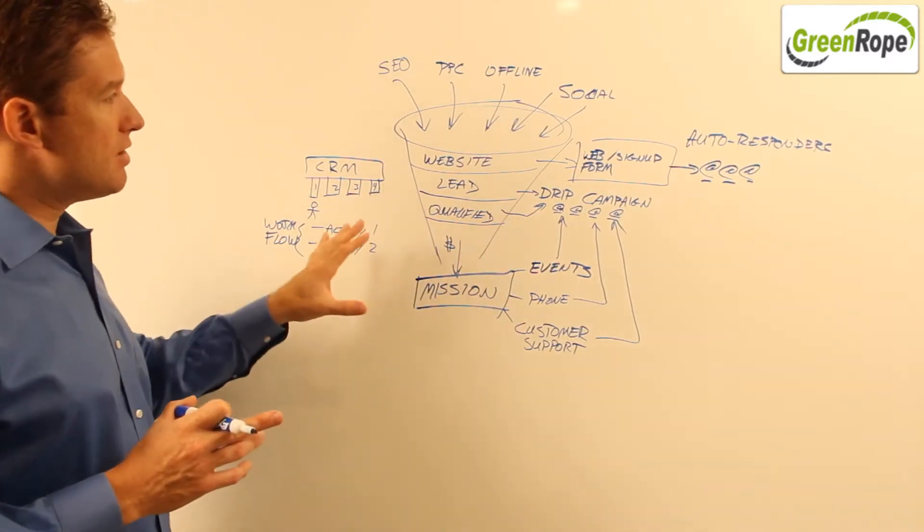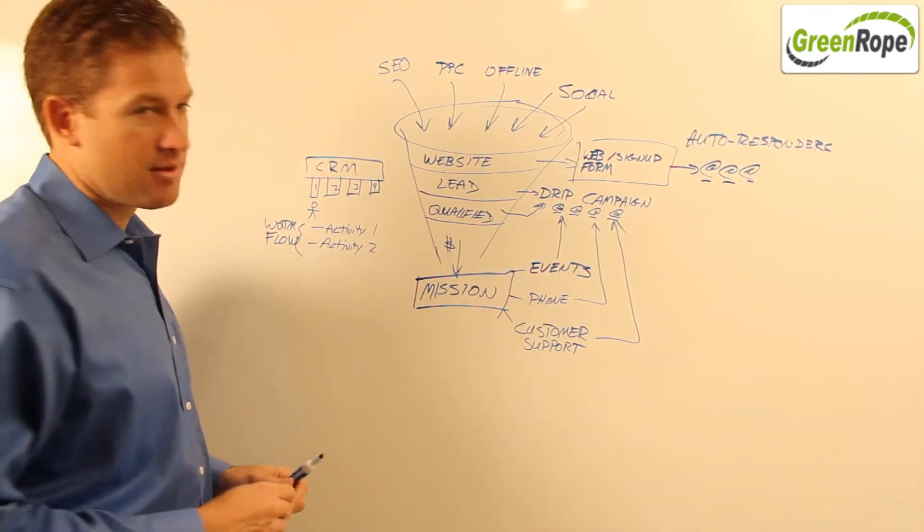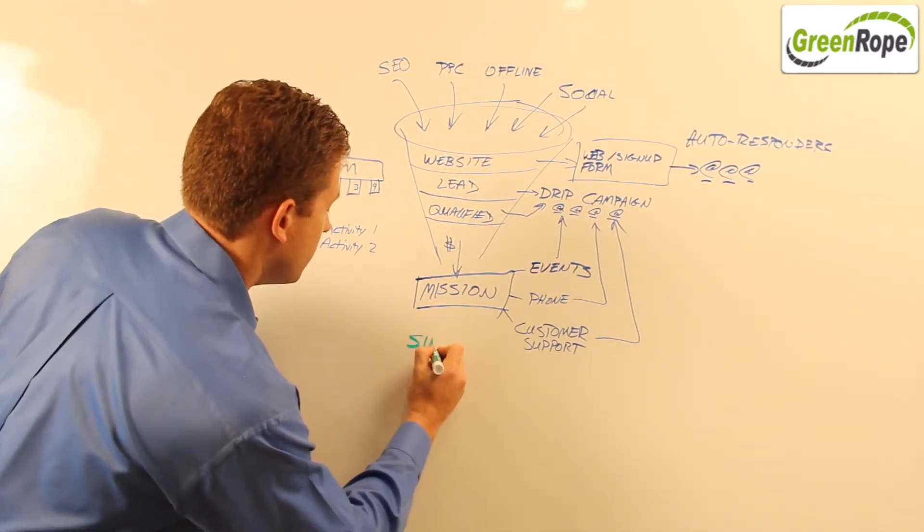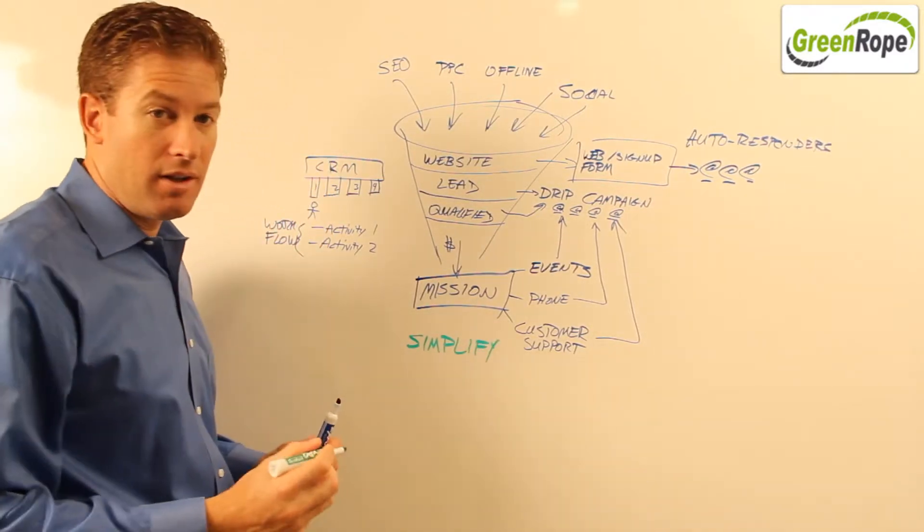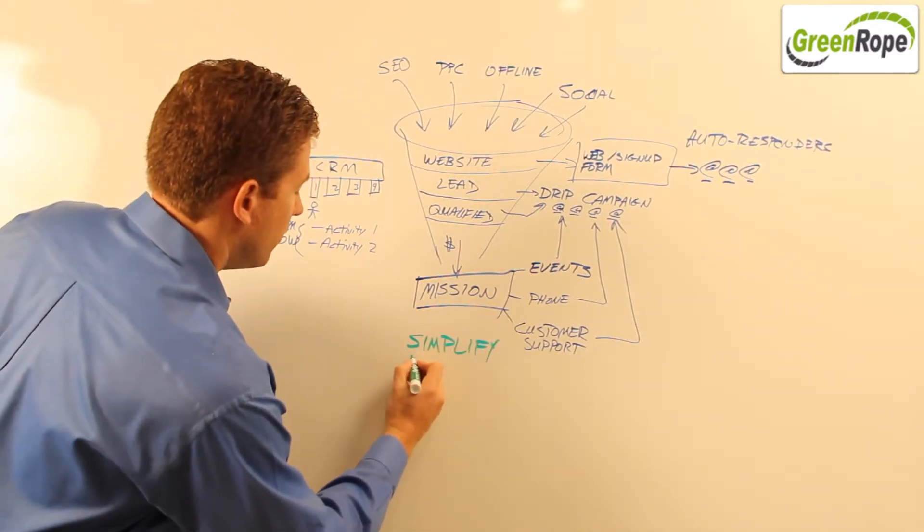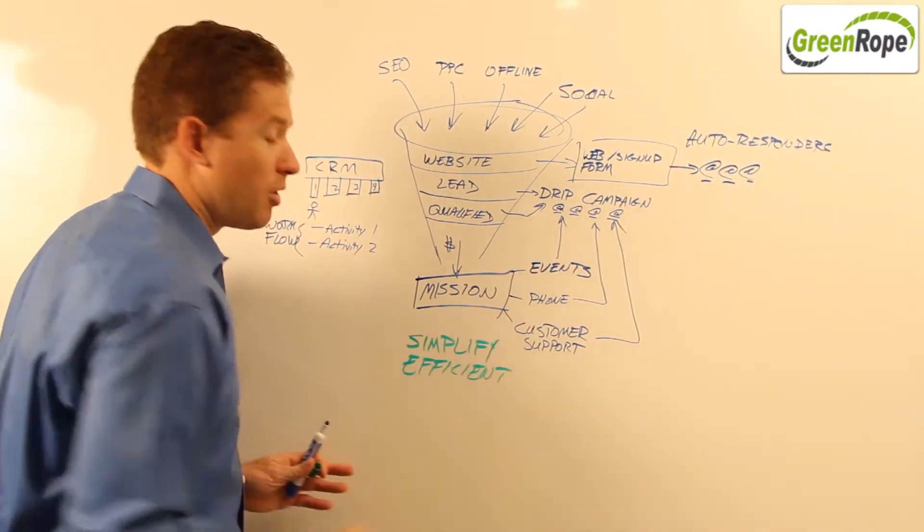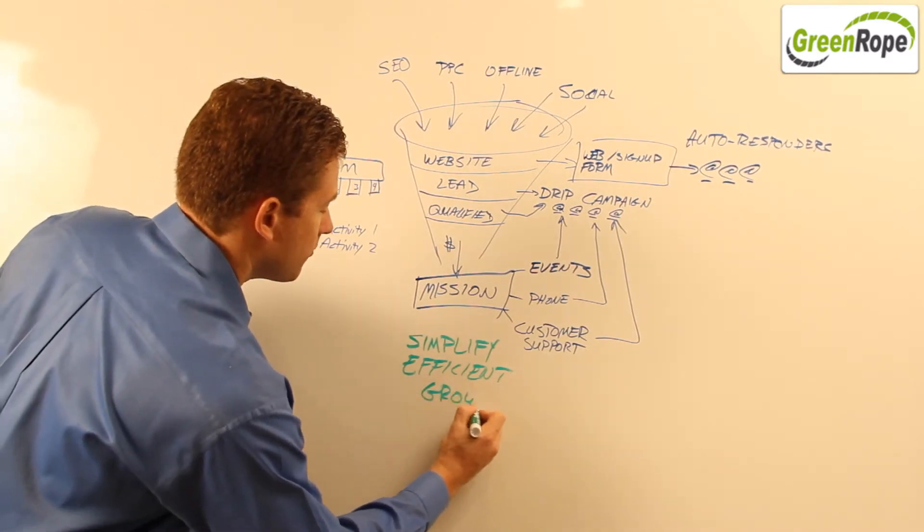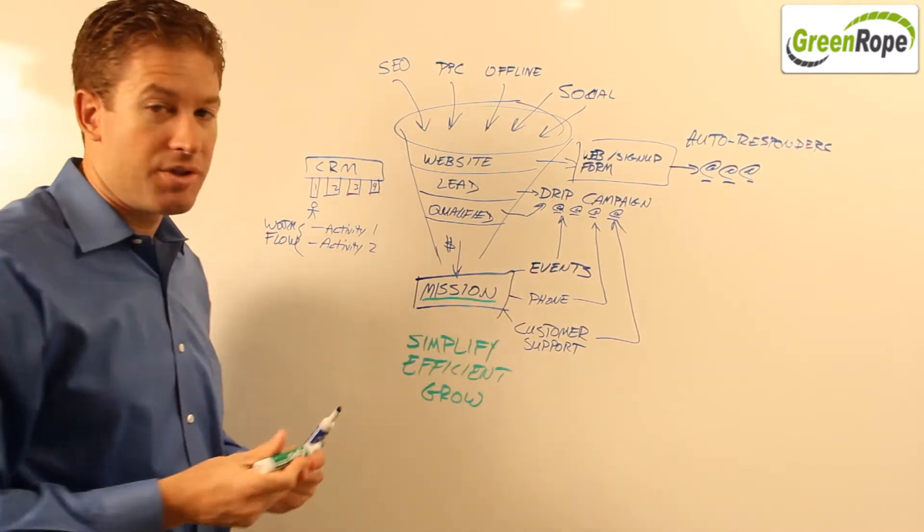So ultimately, the reason why there is such a thing as automation, it really comes down to simplification of your business processes. If you can simplify, then you can become more efficient. And with more efficiency, you can grow, because it allows you to focus on what's most important, which is the mission.